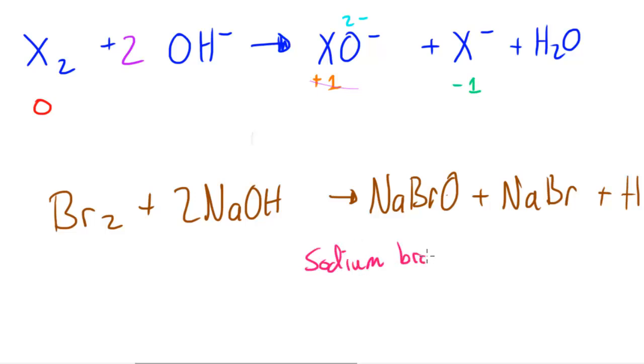Now, this particular compound here is often referred to as being sodium bromate. Sodium bromate and since the bromine in this particular molecule has an oxidation number of 1, we often put the 1 here. So this is sodium bromate(I). And if it was chlorine, it would be sodium chlorate and maybe iodine, sodium iodate. So yeah, that's how the naming would be of this particular part.